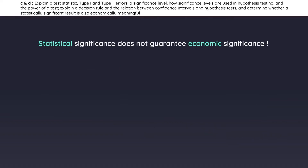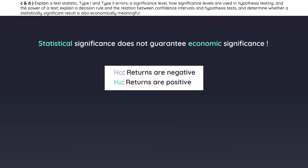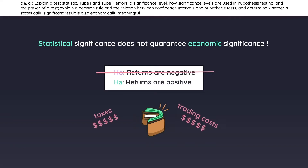You should also be aware that statistical significance does not guarantee economic significance. For example, our hypothesis test may conclude that a given trading strategy generates positive returns. However, in the real world, once you factor in trading costs or taxes, then it doesn't really make sense economically.